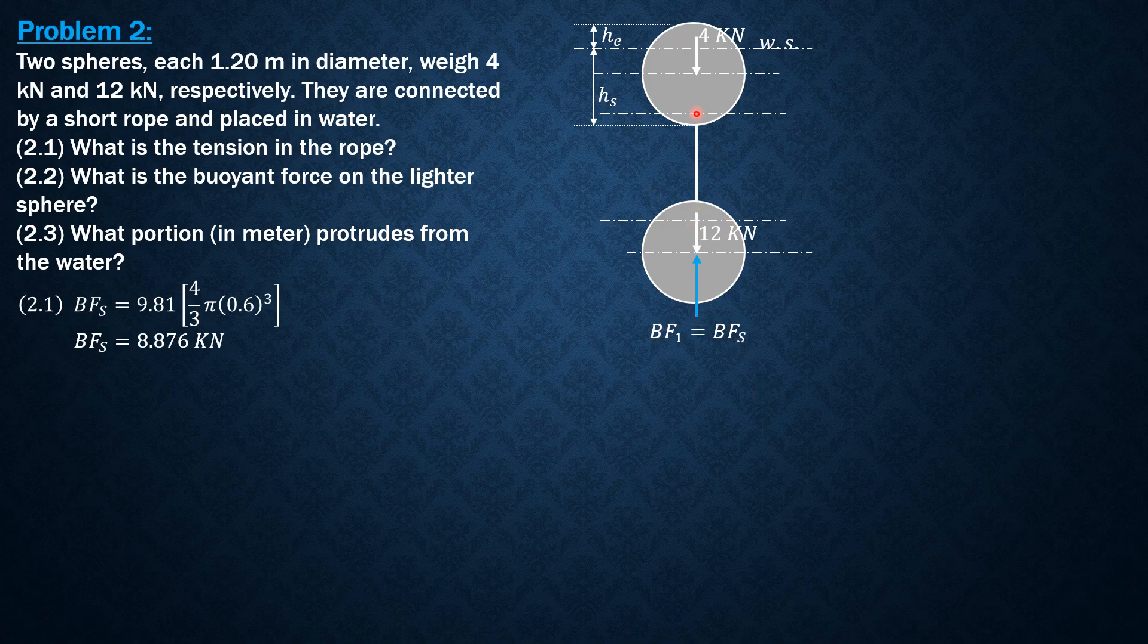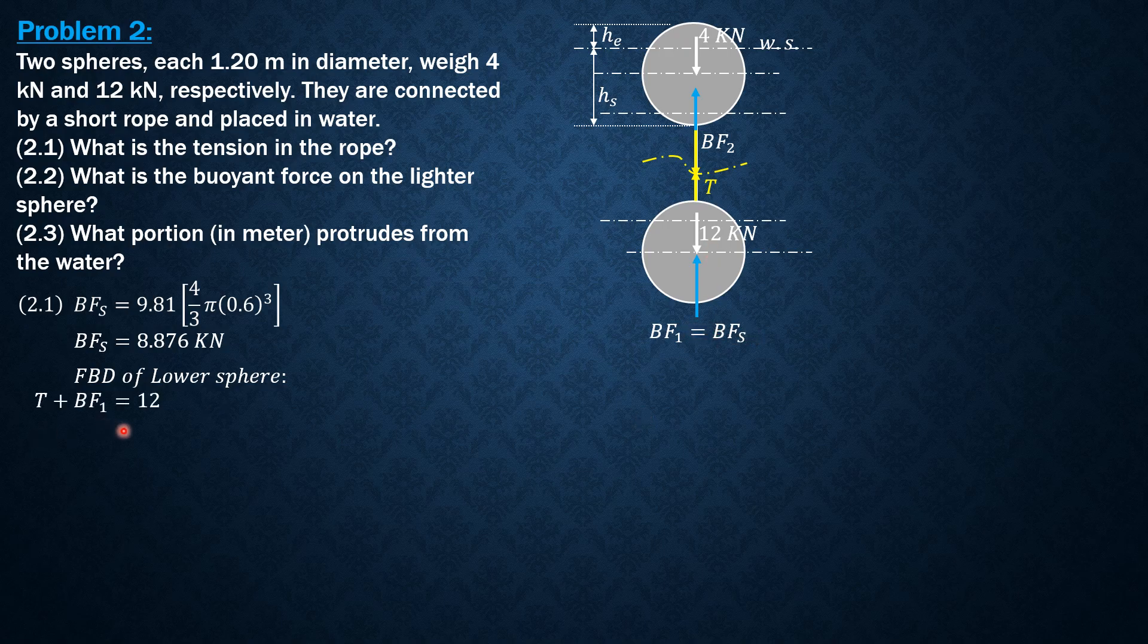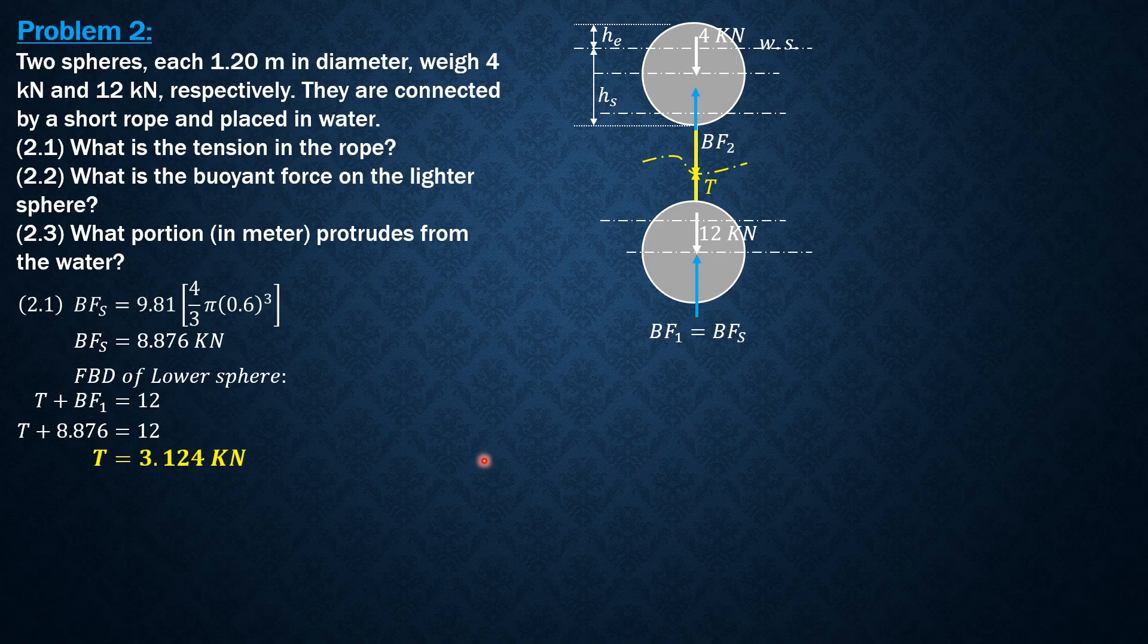And the buoyant force in the lighter sphere, we'll call that BF2. For the first question, tension in the rope, let's cut the rope then apply the tension. Let's consider the free-body diagram of the lower sphere or the heavier sphere. Summation of vertical forces equals 0, so our equation would be T + 8.876 = 12, or T + BF1 = 12, where BF1 is 8.876. Therefore, the tension in the rope equals 3.124 kilonewtons.